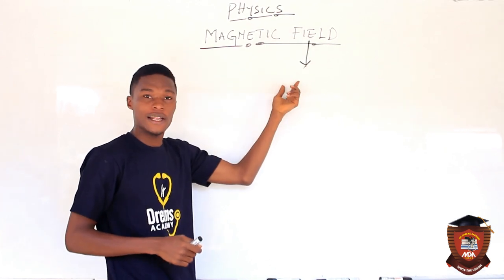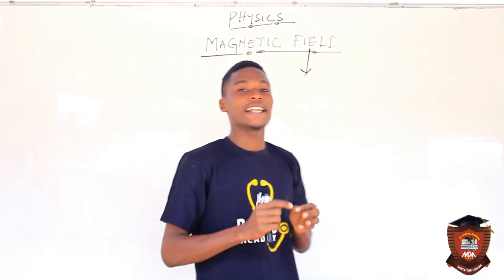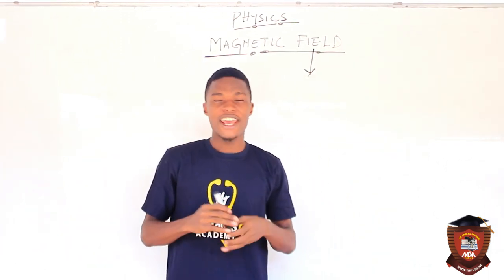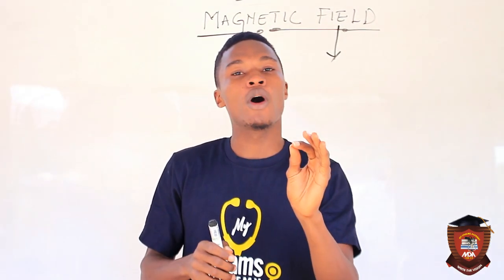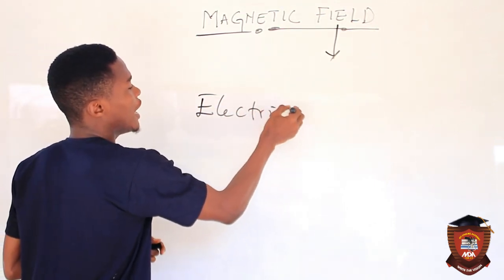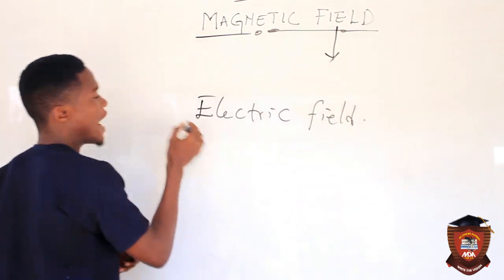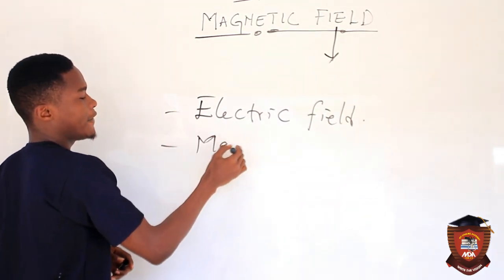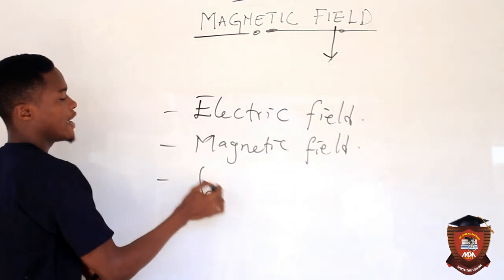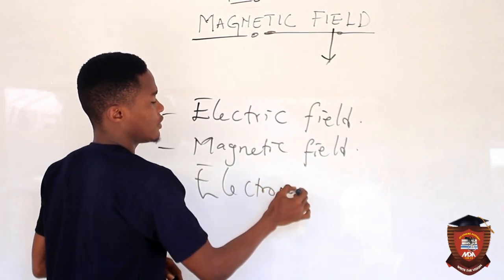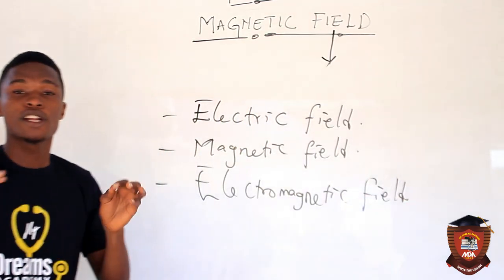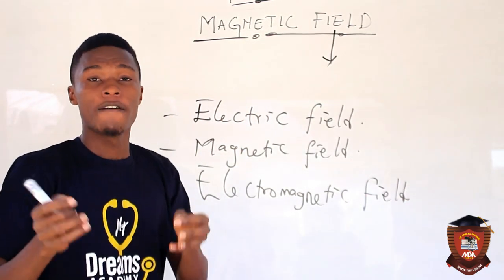As far as physics is concerned, anytime you talk about a field, it is a region of space where a particular quantity can be felt. Examples of fields include the electric field, the magnetic field, and the electromagnetic field. Remember: a field is a region of space where a particular quantity can be felt.